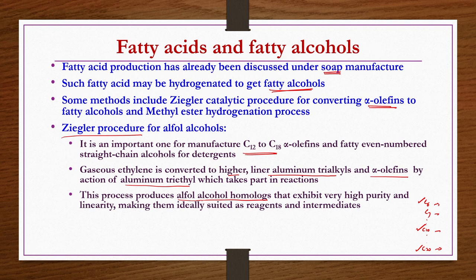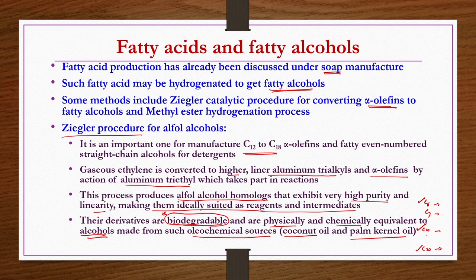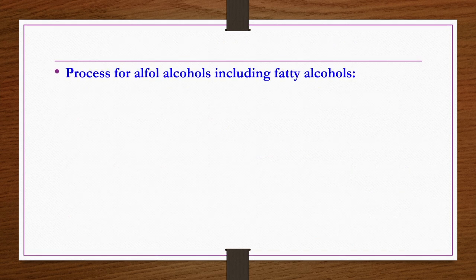This process produces alpha alcohol homologs that exhibit very high purity and linearity, making them ideally suited as reagents and intermediates for many organic syntheses. Their derivatives are biodegradable, which is very important — the hydrocarbon portion of detergents must be biodegradable. In addition, they are physically and chemically equivalent to alcohols made from oleochemical sources like coconut oil or palm kernel oil. Even though they are synthetic, they are biodegradable with properties equivalent to natural ones.